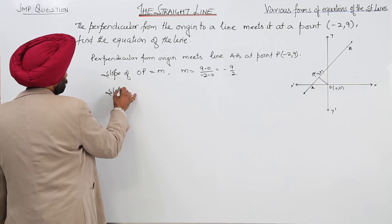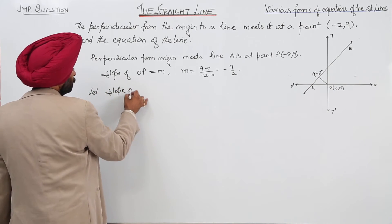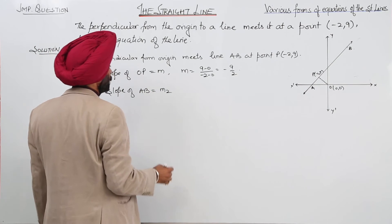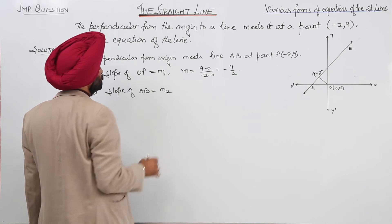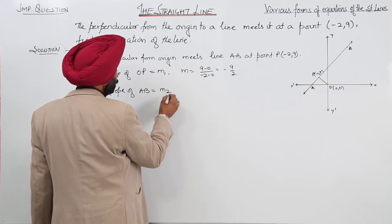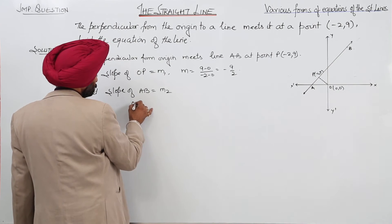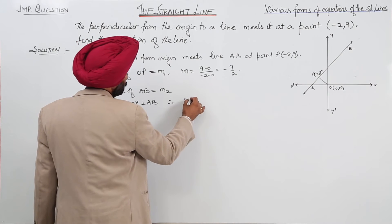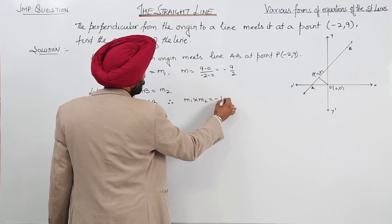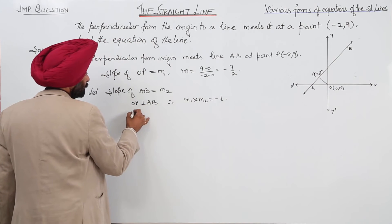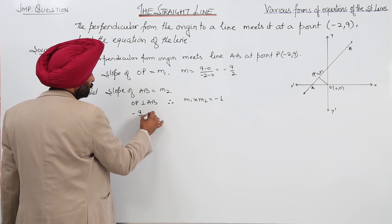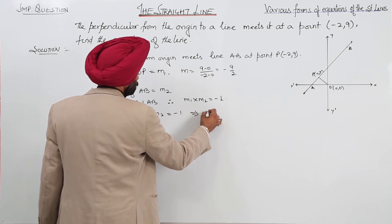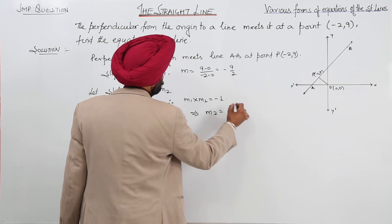Let slope of AB be equal to M2, and slope of OP be equal to M1. Since OP is perpendicular to AB, therefore M1 into M2 is equal to negative 1. So, M1 is minus 9 by 2, giving M2 equal to 2 by 9.